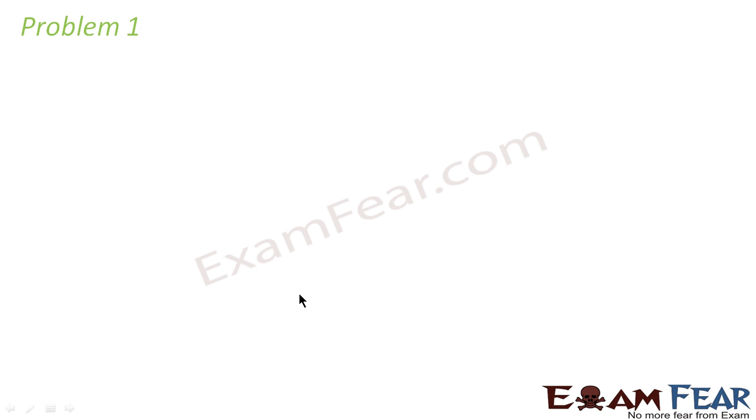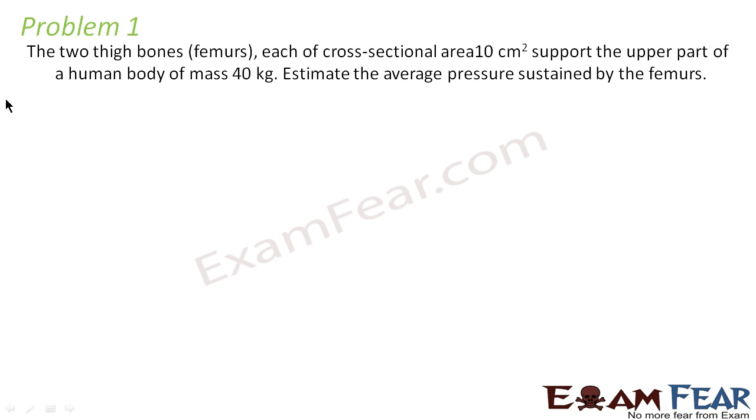Now let us look at a problem related to pressure. The problem says, the two thigh bones, femurs, each of cross sectional area 10 cm², support the upper part of a human body of mass 40 kg. Estimate the average pressure sustained by the femurs.